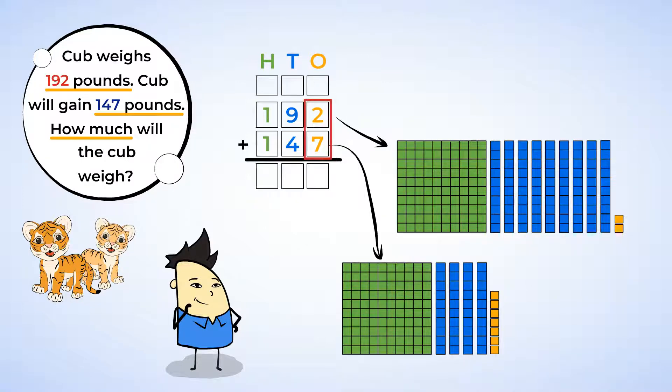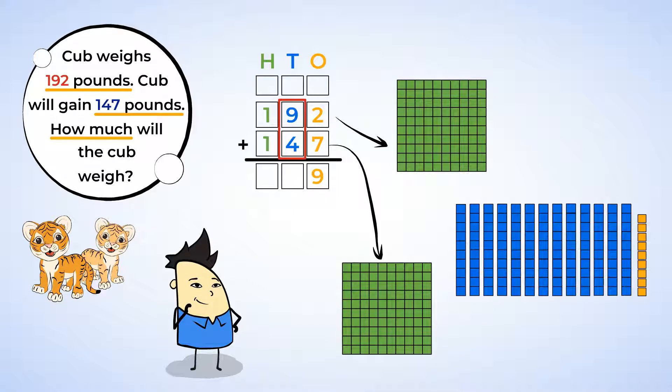As always, start with the ones. Two plus seven is nine, so our answer is nine in the ones place. Next up are the tens. Nine plus four. There are 13 ten sticks, but we can't put a two-digit number in the tens place, so we will need to regroup.